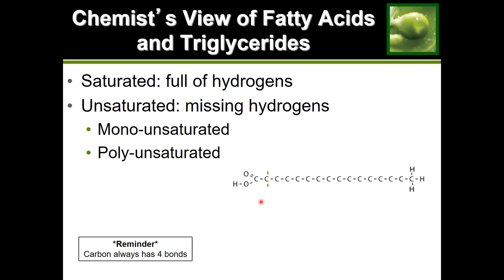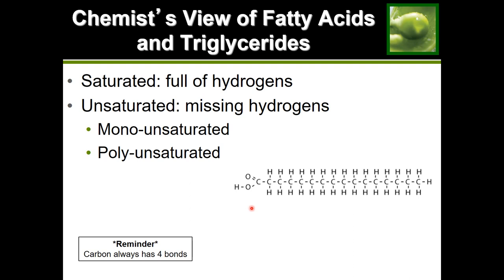If we fill up these carbons with the maximum capacity of hydrogen — two hydrogens each — we can verify each carbon has four bonds: one down, one left, one top, one right. By adding two hydrogens onto each carbon, each carbon now has its four-bond requirement met, meaning it couldn't possibly carry any more hydrogens. It has maxed out its bond requirement.